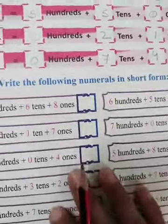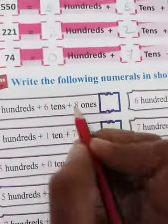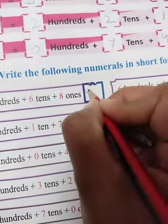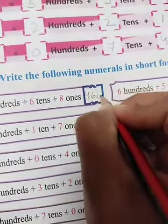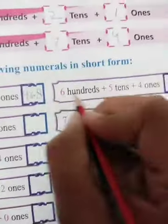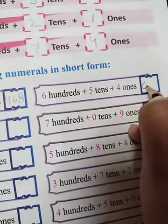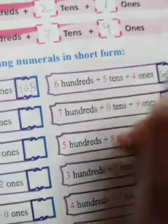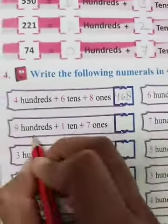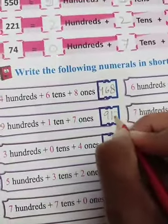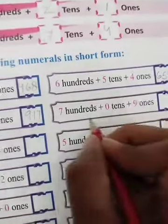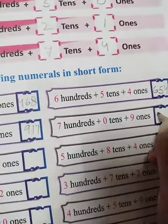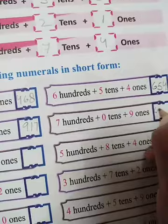Now, write the following numerals in short form. You have to write in short form: 4 hundreds, 6 tens, and 8 ones — so you will write 468. Six hundreds, 5 tens, and 4 ones — you will write 654. Nine hundreds, 1 ten, and 7 ones — nine hundred seventeen, 917.